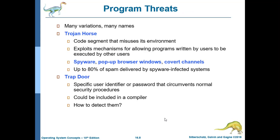Next is program threats, which have many variations and many names. We have the Trojan horse — a code segment that misuses its environment, exploiting mechanisms that allow programs to be executed by other users. Types of Trojan horses include spyware, pop-up browser windows, and covert channels. Up to 80% of spam is delivered by spyware-infected systems.